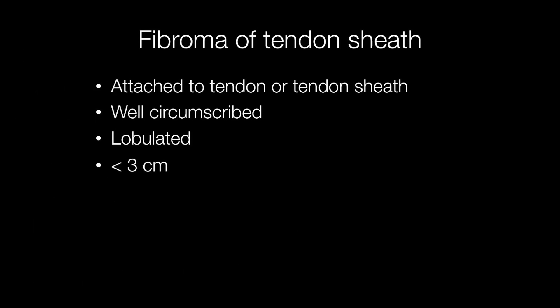As the name indicates, fibromas of tendon sheath are attached to the tendon sheath or the tendon. They are well-circumscribed lesions, lobulated, and usually less than three centimetres in diameter.